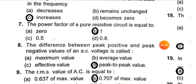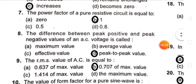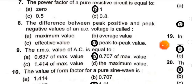The RMS value of an AC voltage is equal to 0.707 of the maximum value — that is, V_rms equals 0.707 times V_max.